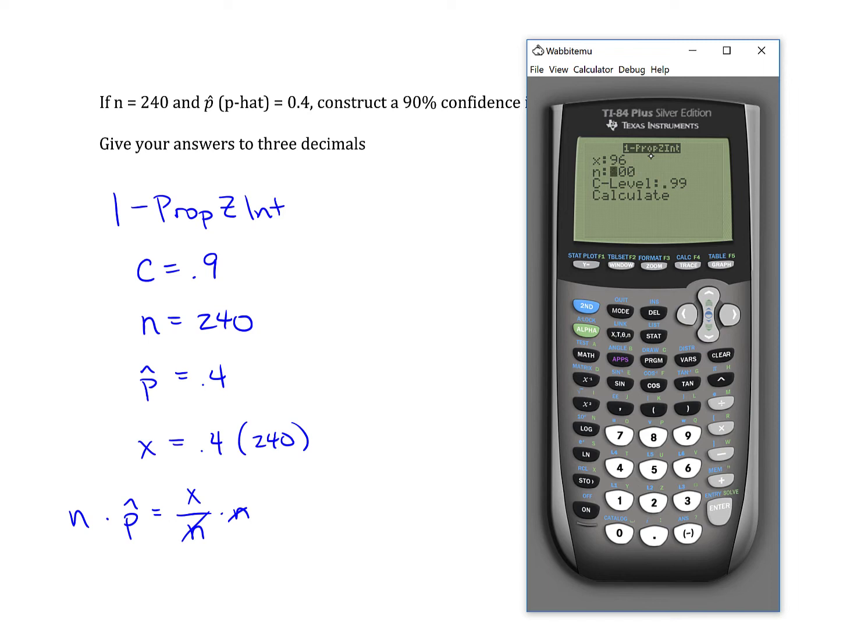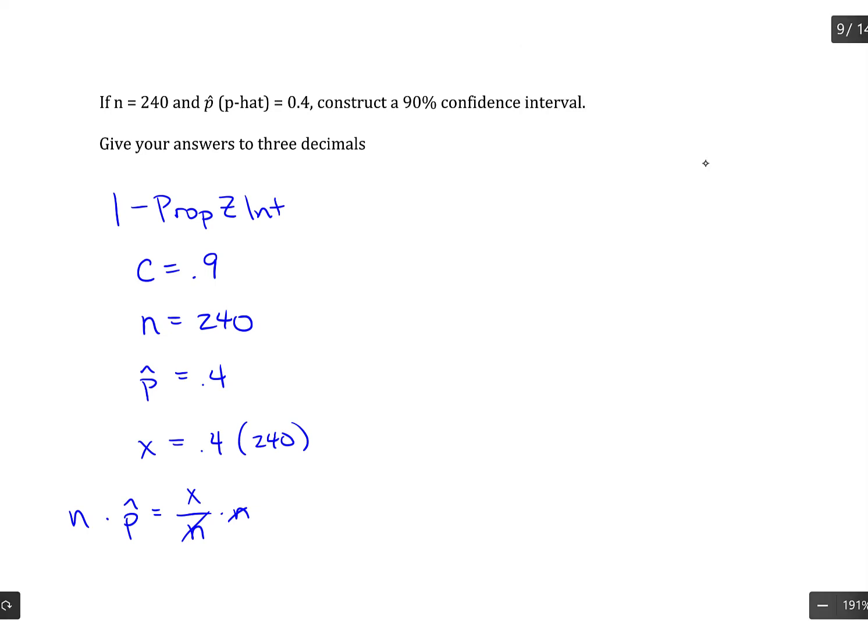Now, if that ends up being non-integer, you do need to round that to the nearest integer too, because the calculator doesn't like these to be non-integer values. All right, 240 is n. Your level of confidence is 0.9. Calculate. And we come up with our confidence interval.